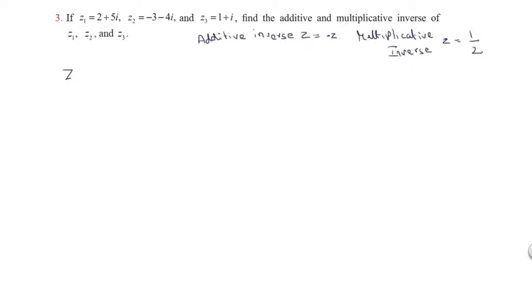Greetings from Success Education Academics. This is question number 3. If Z1 equals 2 plus 5i, Z2 equals minus 3 minus 4i, Z3 equals 1 percent. Find the additive and multiplicative inverse of each. The additive and multiplicative inverse can be figured out.